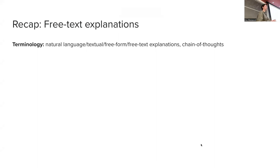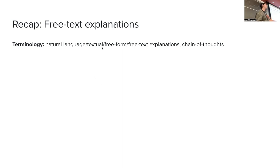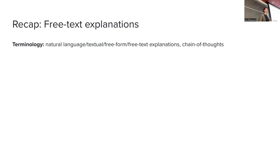Before we move to the next topic, I want to give a quick recap of free text explanations or chain-of-thought. The terminology is all over the place — a few years back we introduced terms like natural language explanations or textual explanations, then free form explanations, then free text explanations, and then chain of thought emerged as a new term. All of these are more or less the same thing. The reason natural language and textual explanations were rebranded is because today we'll see another type of explanation where we highlight input text.